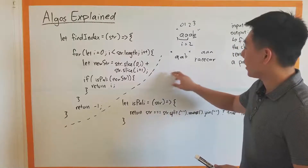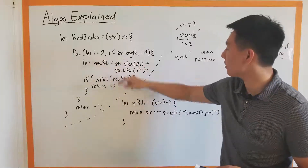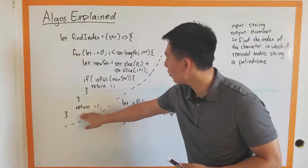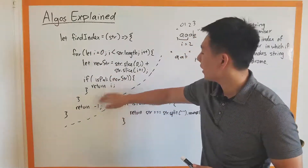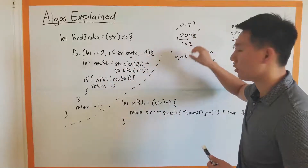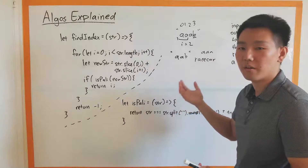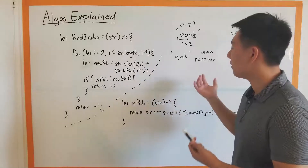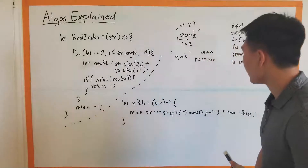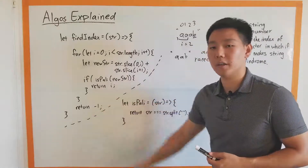So that was the slice part. If the isPally helper function returns true, we return the index. If it doesn't, we return negative one at the end. That return negative one is outside of the for loop, meaning it'll only return negative one if we went through every single character, tried taking each one out, checked if it was a palindrome, and nothing worked. If we got an empty string, it wouldn't even enter the for loop, so it just returns negative one.